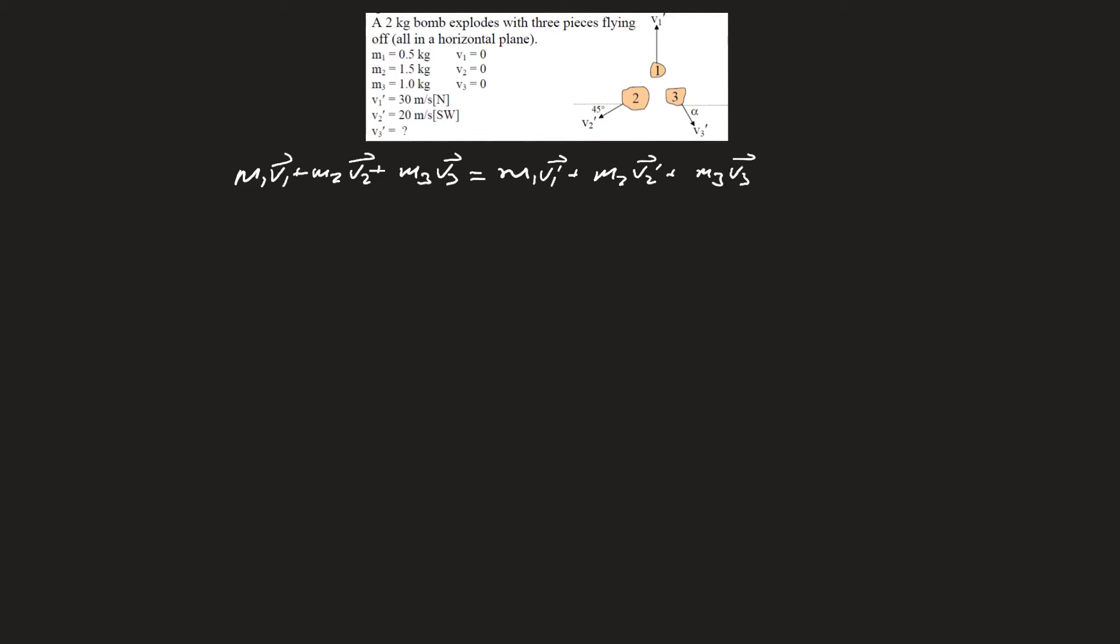I'm going to start by looking at what exists in my x direction. In my x direction, I have no initial momentum, so that's 0. Mass number 1 has no x component to it, so it's going to go right to 0.